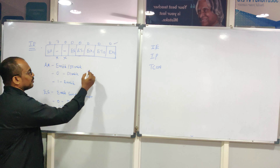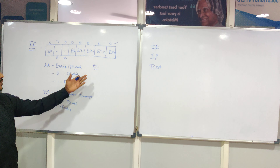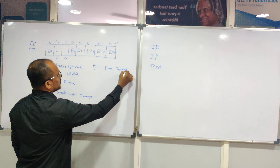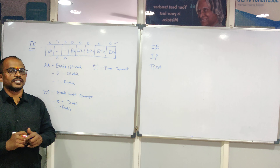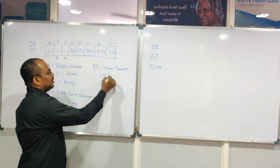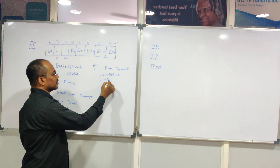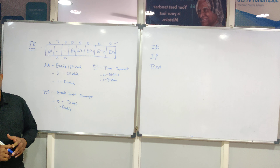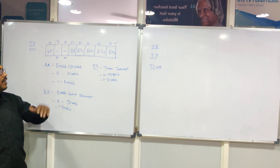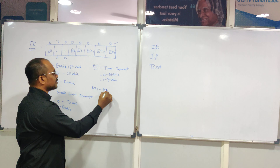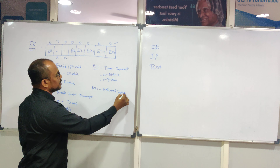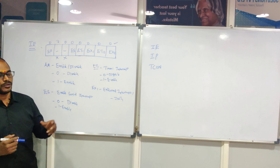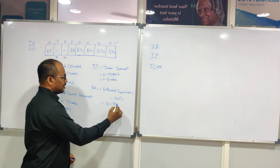The ET1 bit in the IE register is for Timer 1 interrupt enable or disable. Logic 0 disables it and logic 1 enables it. Similarly, EX1 refers to external interrupt 1, which is INT1 on the microcontroller — logic 0 disables it, logic 1 enables it.